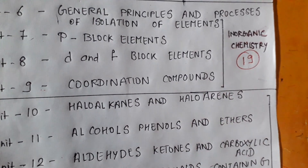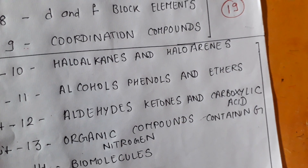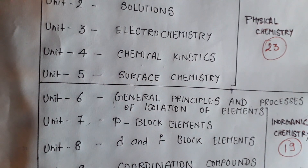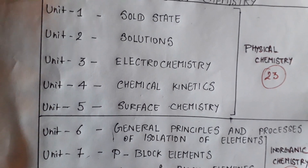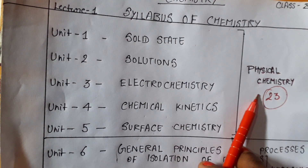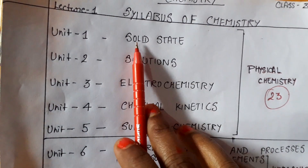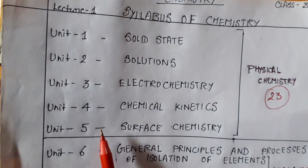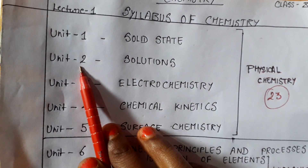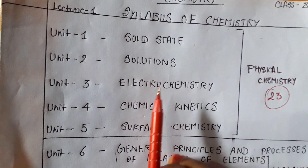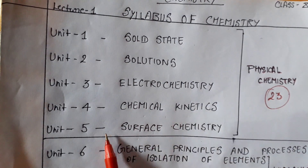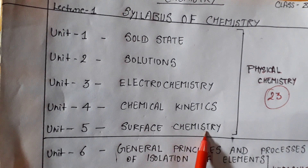In class 12, we have to study a total of 16 units. In physical chemistry, we study 5 units. The first unit is solid state, the second is solutions, the third is electrochemistry, the fourth is chemical kinetics, and the fifth is surface chemistry.